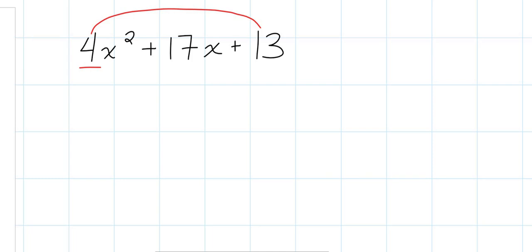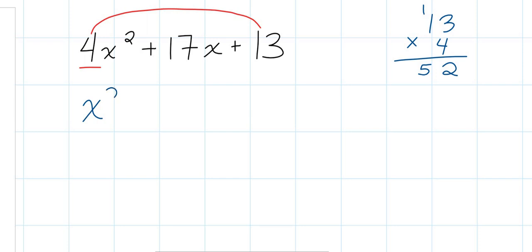The way you do the AC method is you start by multiplying your coefficient of x squared, which is 4, times your C value, which is the whole number at the end. So we're going to multiply 4 times 13. No calculator — so 13 times 4: 3 times 4 is 12, carry the 1, 4 times 1 is 4 plus 1 is 5, so 52. Now we rewrite the equation as x squared — without the 4 — plus 17x plus 52.